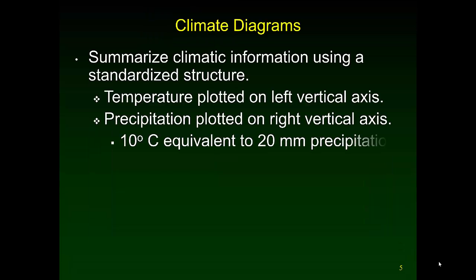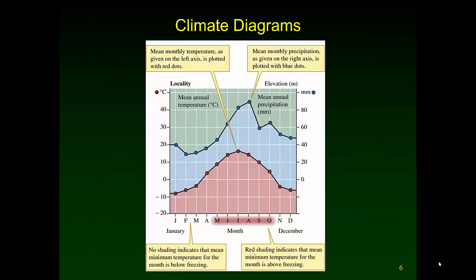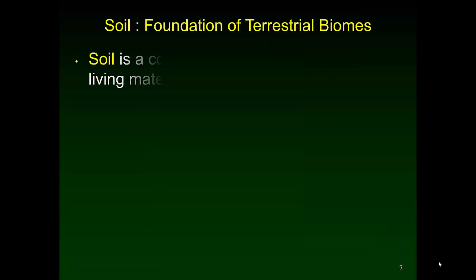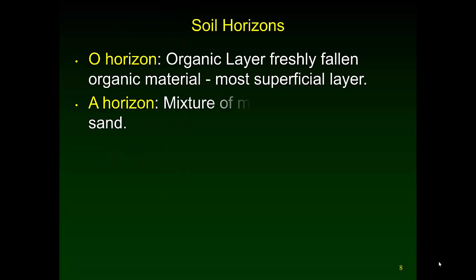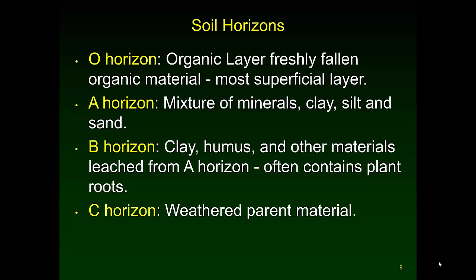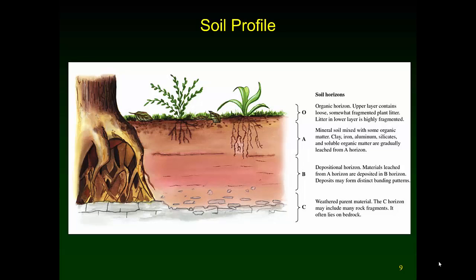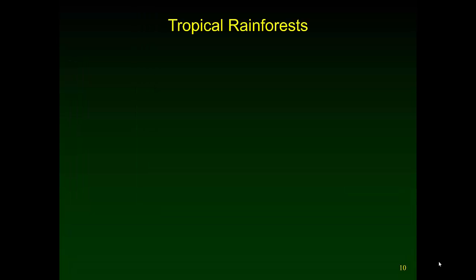We've gone over climate diagrams, how they're set up and how you interpret them. In the climate diagram, if the precipitation line falls above the temperature line, then there's adequate precipitation to grow plants, unless the temperatures drop below zero Celsius, below freezing. We briefly talked about what soils are like in the terrestrial biomes, and went over a soil profile.